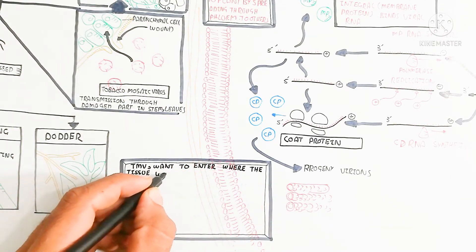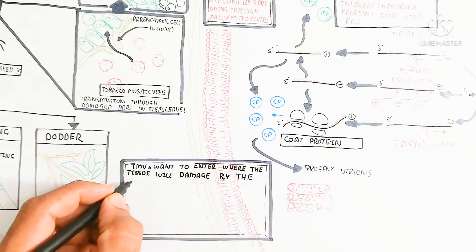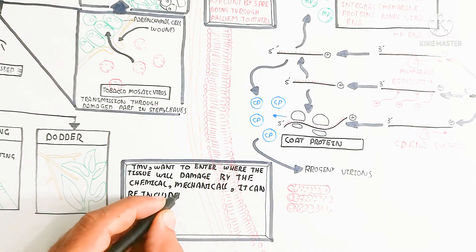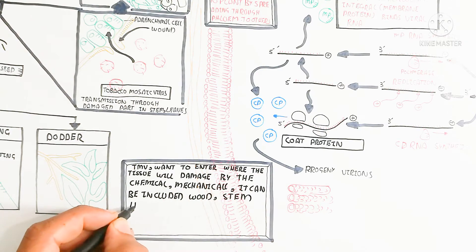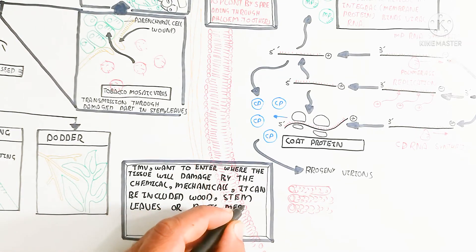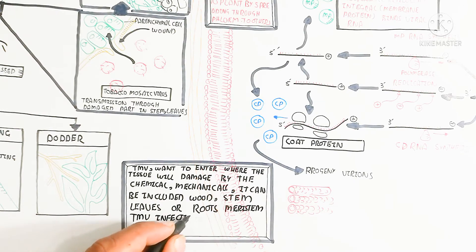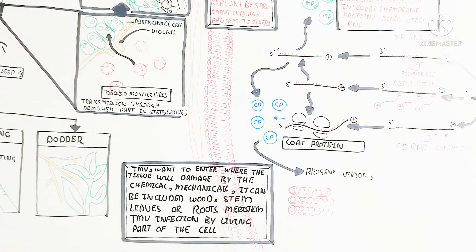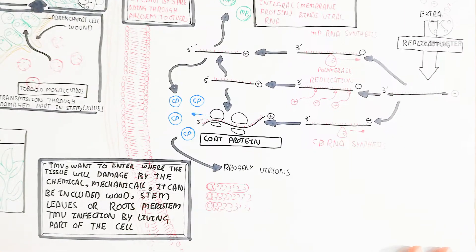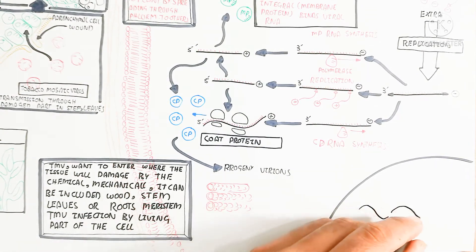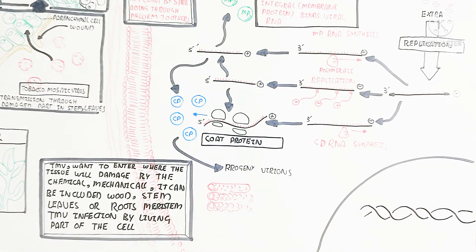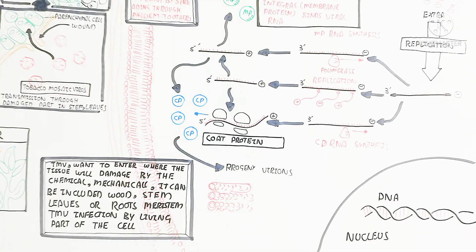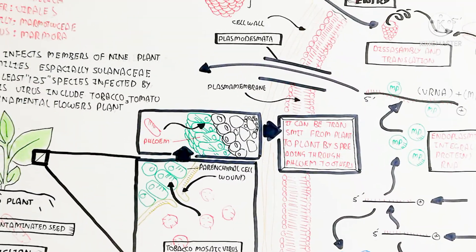TMV enters where tissue is damaged by chemical or mechanical means, including wood, stem, leaves, roots, or meristem. Tobacco mosaic virus infection requires the living parts of the cell — the parenchyma cell is important because it is living, and the phloem tissue is also living. These living parts are important for TMV. The DNA is present in the nucleus, but TMV does not use the nucleus of the host — it is an RNA virus and DNA is not involved in its replication cycle.